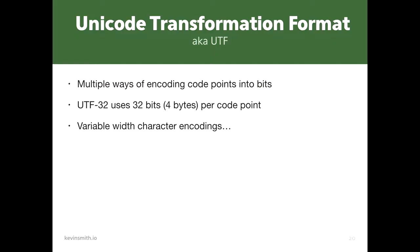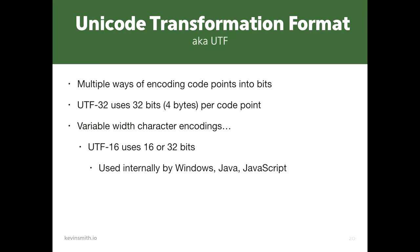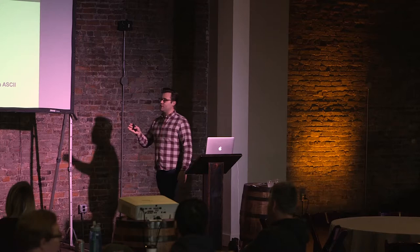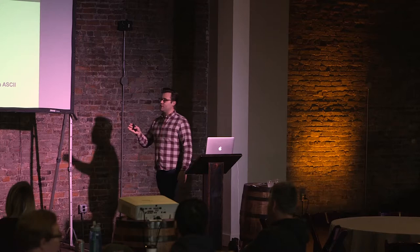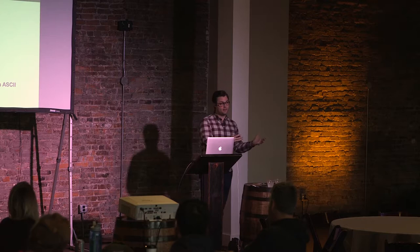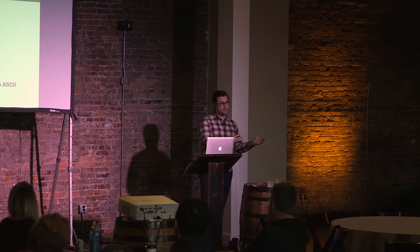We also have variable-width encodings for UTF. UTF-16 uses either 16 or 32 bits and is used internally by Windows, JavaScript, and Java. Then there's the wildly popular UTF-8, which uses one, two, three, or four bytes to determine the code points. It's actually really efficient because it's backwards compatible with ASCII — those same ones and zeros that determine an F in ASCII also determine an F in UTF-8. So if you've originally encoded something in ASCII, you can read it with UTF-8 and it works perfectly.